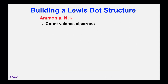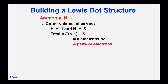Let's use ammonia, NH3, as an example. First, count the valence electrons — only valence electrons are involved in bonding. Nitrogen is group 5, hydrogen is group 1, and we have three hydrogens: so three times one plus five equals eight valence electrons. Divided by two, we have four pairs of electrons in ammonia. Those pairs can be lone pairs on one atom or bonding pairs between two atoms.